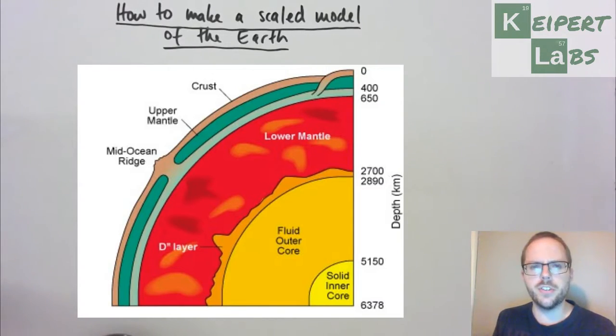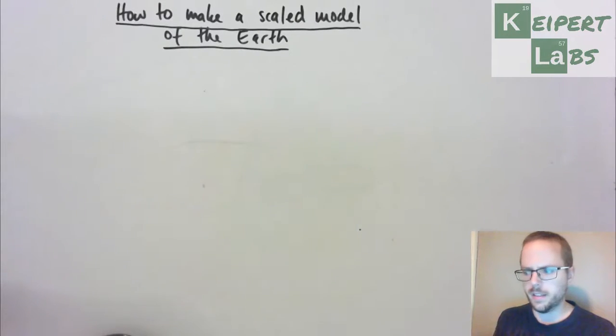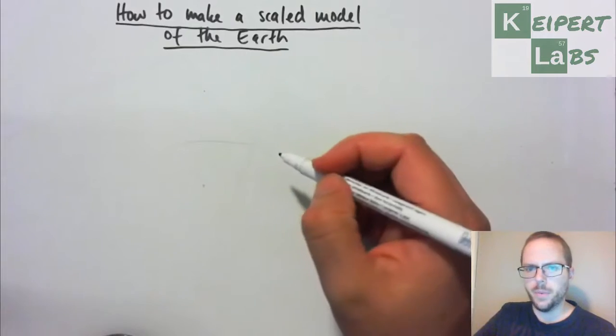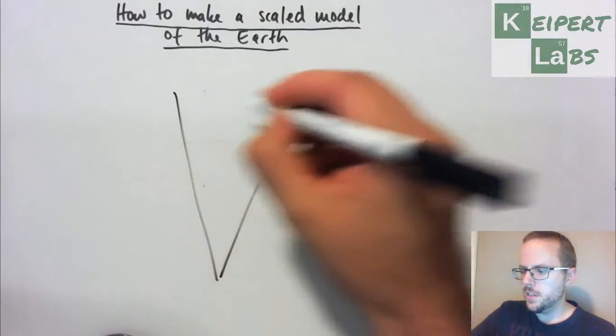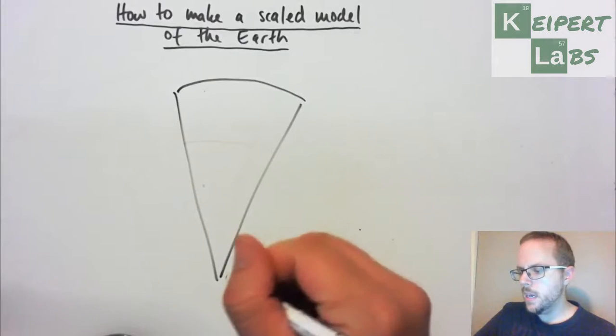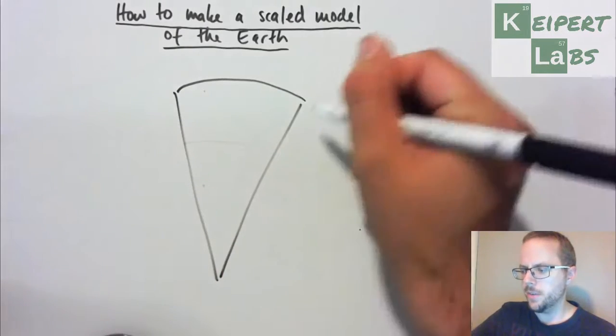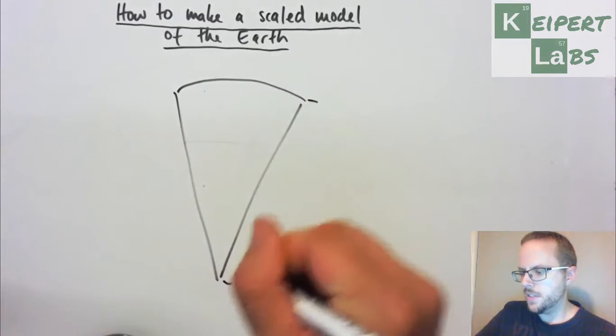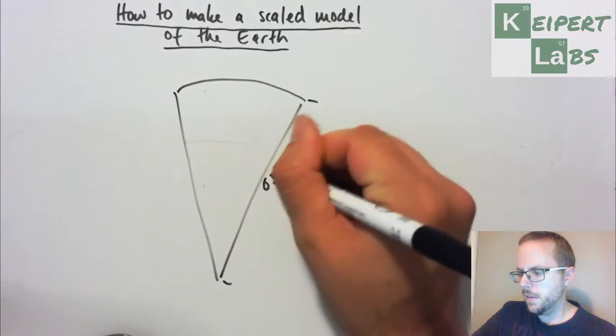And then at 2,700 to 2,890, we've got this thing called the D layer. Now we're not going to go into that in a lot of detail, but that's something we can identify. And then going down to 5,150 at the top of our inner core, and then to 6,378. So what we need to try and do is represent these distances effectively on the diagram, the sector shape that we're going to have. So we're going to have this shape that looks like this. And the edge here is going to represent our 6,378 kilometres.